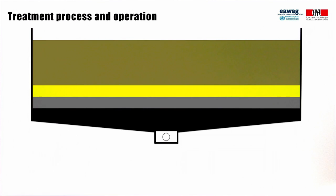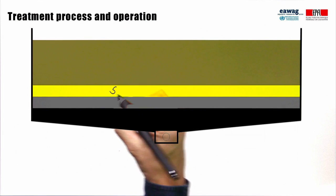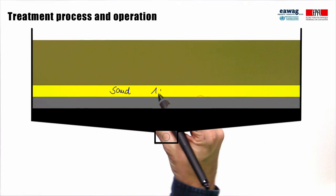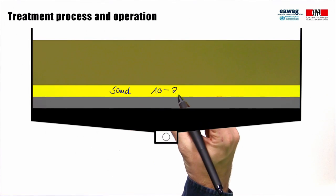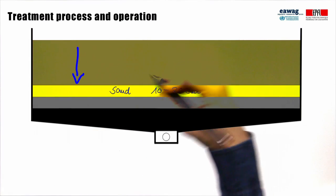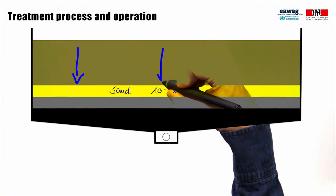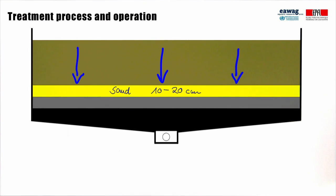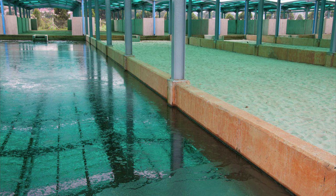The top layer of the filter media is typically sand with a depth of 10 to 20 cm. Sludge is loaded on the surface of the sand filter layer for solid-liquid separation. This picture shows the surface of an unplanted drying bed next to a drying bed that has been loaded with fecal sludge.